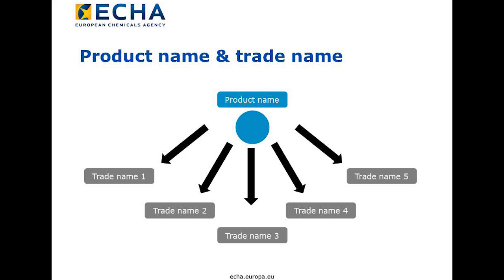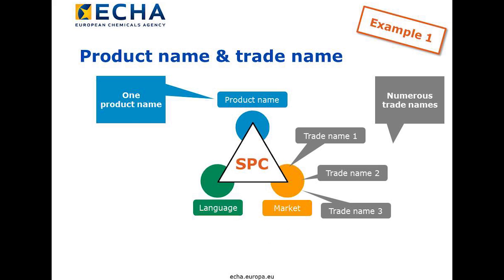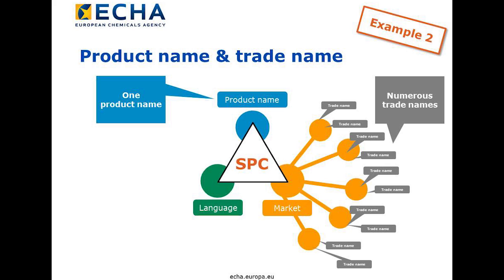Let's look at this through two examples. In our first example, we have a product on a single market in a certain member state and there are a number of trade names. The reason could be that we want to sell the product via different retailers. In our second example, we decide to market our product in a number of member states via mutual recognition. Now we need SPCs for the different markets and with the related individual trade names. Again, we can use a lot of different trade names and they will all relate to an identical product formulation.